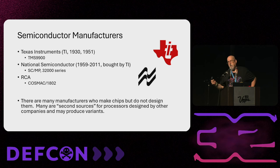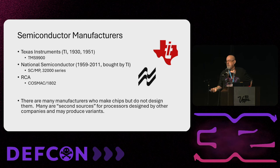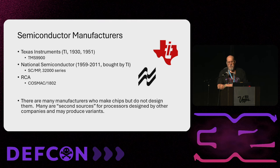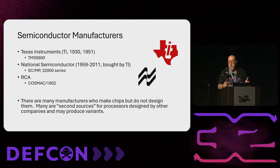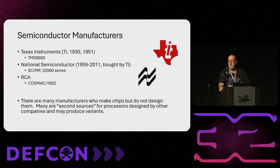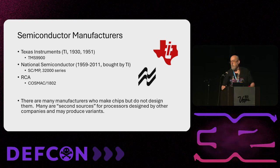A lot of companies out there only make chips, they don't design them. Even today, Apple designs their own silicon — the M1, 2, 3, and 4 — but they don't make it; they go to another company and say 'here's the design, make us these chips.' ARM is nothing more than a licensing company — they don't make ARM chips, they design the ARM architecture and license it to other companies like Broadcom and others who make it. The Raspberry Pi, for example, uses a Broadcom-made ARM processor. That's just how it is.